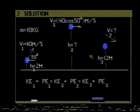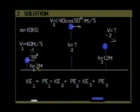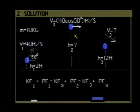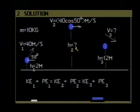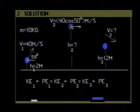Here is a figure displaying the data for the problem. When the stone is released, it has a height h1 of 2 meters above the ground, and a velocity v1 of 40 meters per second at an angle of 50 degrees above the horizontal. When it is at its maximum height, we'll call that height h2. At that maximum height, the stone will not have any vertical component of its velocity.